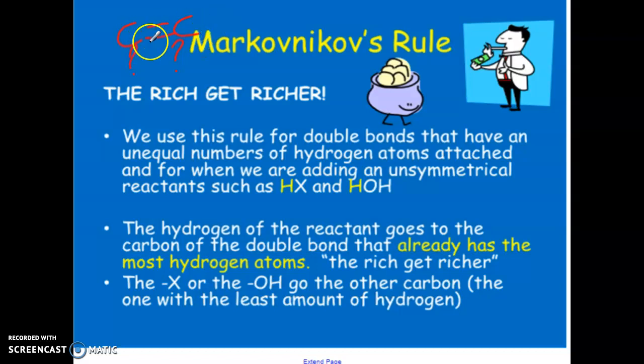The one that has more hydrogen atoms will get an additional hydrogen atom. If you notice, whether you're doing hydrohalogenation or hydration, the hydrogen is going to go to the carbon with more hydrogens. The other atom, or ion, or group of atoms, will go to the carbon with the least amount of hydrogen atoms.